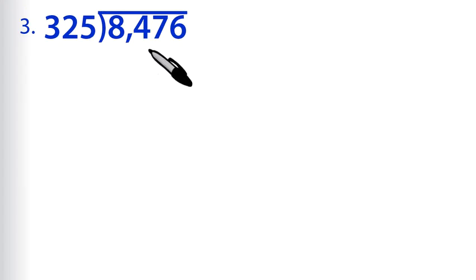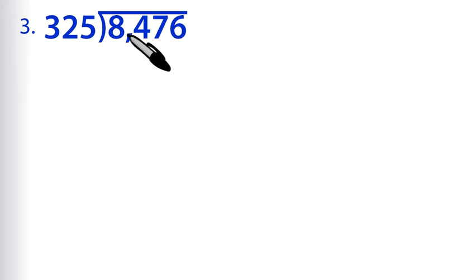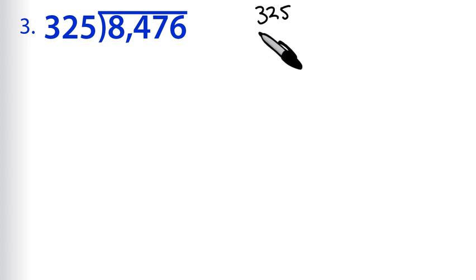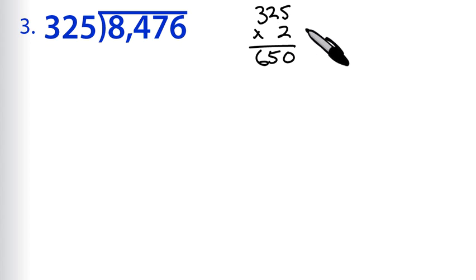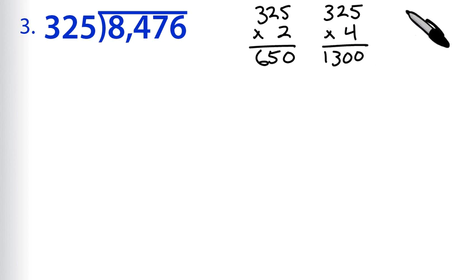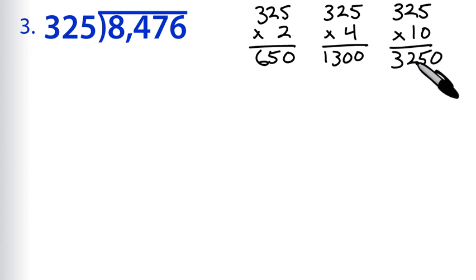For problem 3, we have 8,476 divided by 325. These are big numbers, which makes this a perfect problem for the partial quotients method. We'll pick our multiples: 325 times 2 is 650; doubling that, 325 times 4 is 1,300. And a multiple of 10: 325 times 10 is 3,250. That should be pretty useful.